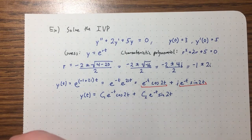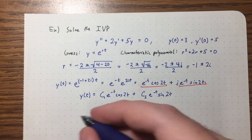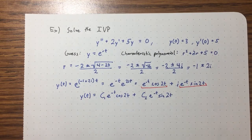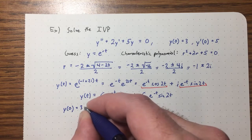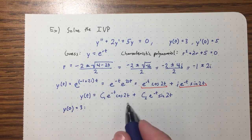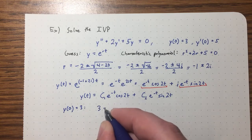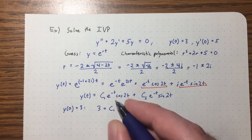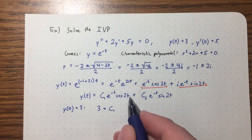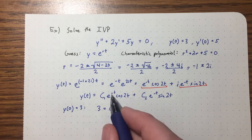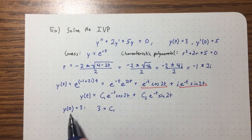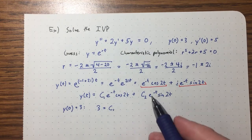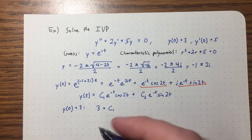Now let's use our initial conditions. Using y(0) = 3: we get 3 = c1·e^0·cos(0) + c2·e^0·sin(0) = c1·1·1 + c2·1·0 = c1. So c1 = 3 right off the bat.